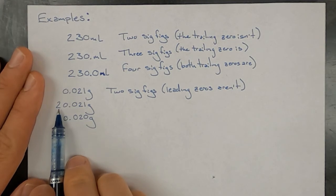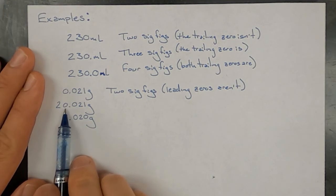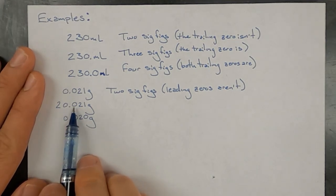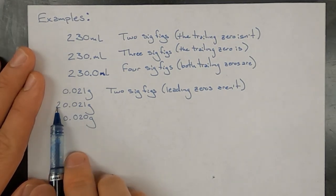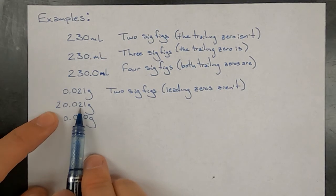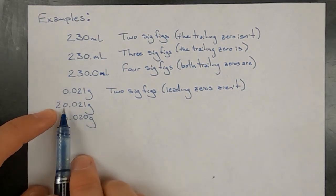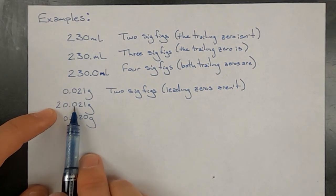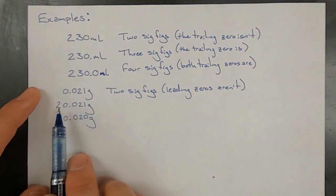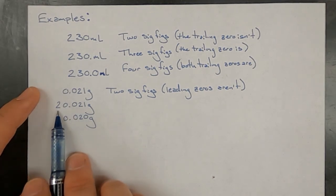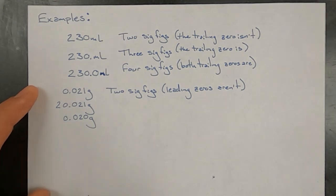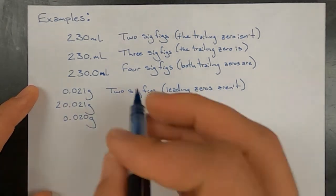Putting a two in front of the entire thing means that now those zeros are an example of the sandwich rule — you have two digits that are definitely significant as non-zero digits, and these zeros are sandwiched in between them. So now those two zeros are significant, and this measurement has five significant figures.